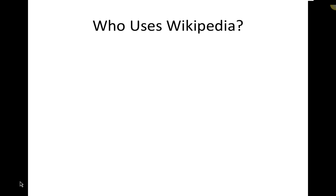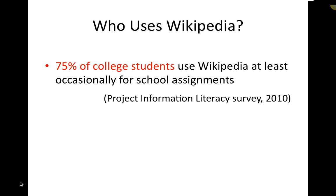From the Project Information Literacy Survey of 2010 — a national survey of a couple dozen campuses, college students sophomore through senior — about three-quarters of college students do use Wikipedia at least occasionally. I was surprised it was this low. And from the Pew Research Center, which does big national phone surveys, 69% of Internet users with a college degree use Wikipedia.